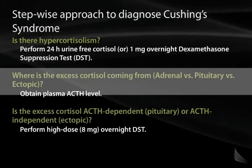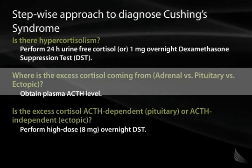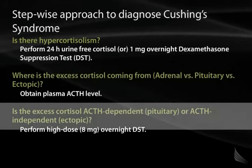The second step is to determine where the excess cortisol is coming from — the adrenal gland, the pituitary, or an ectopic source such as a lung tumor or bronchial carcinoid. The test that distinguishes these is a plasma ACTH level. Because of negative feedback, plasma ACTH and cortisol are reciprocally regulated: high cortisol with low ACTH suggests an adrenal source, whereas high ACTH suggests pituitary or ectopic ACTH is driving the process.